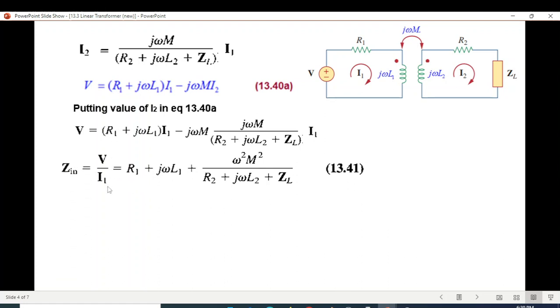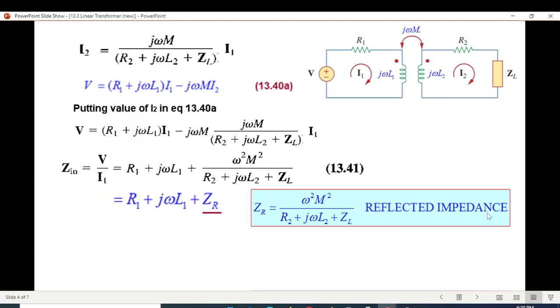V over I1 is actually the total input impedance. Z in equals Z1 plus j omega L1 plus the reflected impedance ZR. Right hand side impedance reflected to left hand side is the reflected impedance ZR.